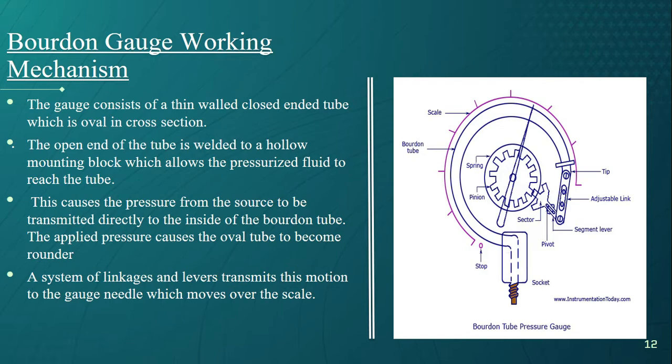The surrounding in which the process is carried out is also important as corrosive atmosphere or fluid would require a material which is corrosion proof. The commonly used materials are phosphor bronze, silicon bronze, beryllium copper, inconel, and other carbon and chromium alloys.